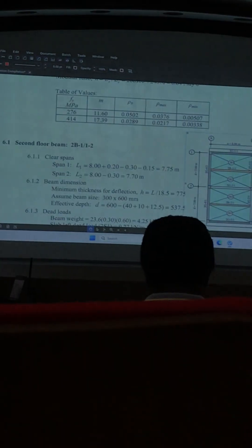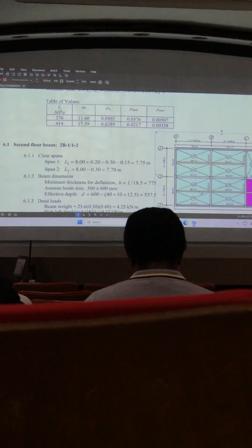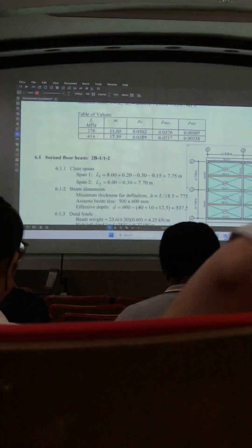We are on the second floor of the framing plan. We are working here with me. We have 2B1-1, 2B1-2. Then we have 2B2-1, 2B2-3. Then we have here 2B3, and this is 2B4.